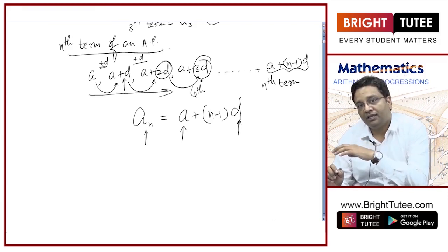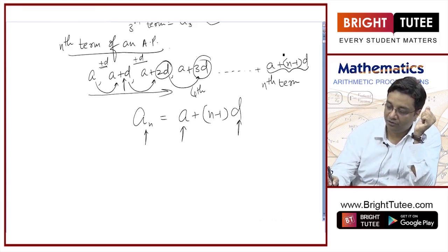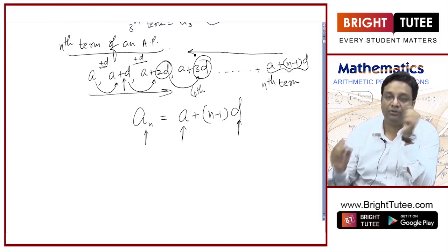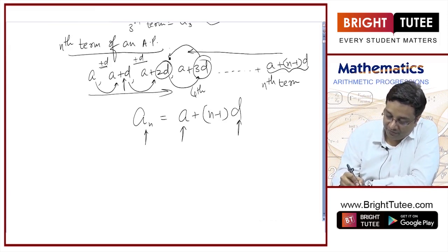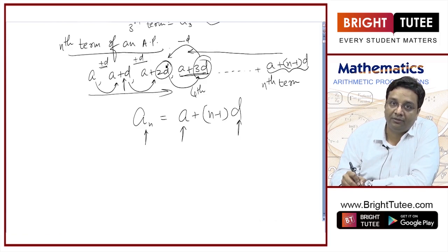But if I go from right to left, if I go from here to here, what I am doing is I am subtracting D from each term. If I subtract D from this term, I will get this term.